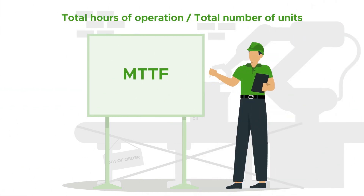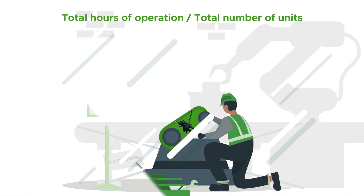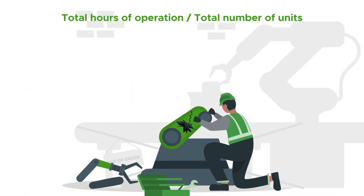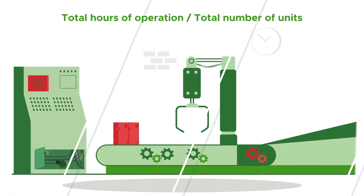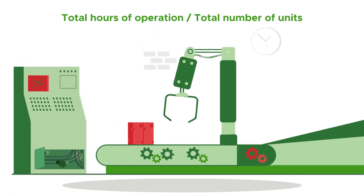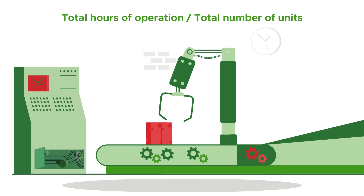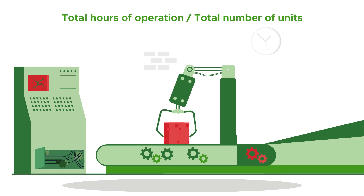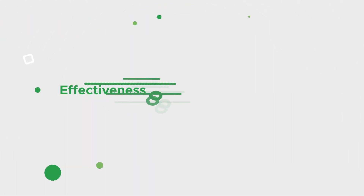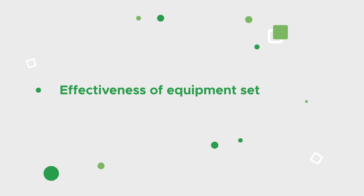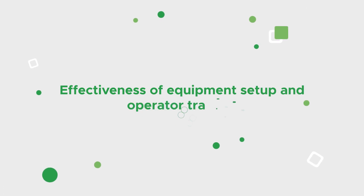MTTF, on the other hand, is the average time until the first failure of a system. It can be calculated by taking the total operational time and dividing it by the number of systems that fail within that time period. MTTF is a valuable way to assess the effectiveness of equipment setup and operator training.